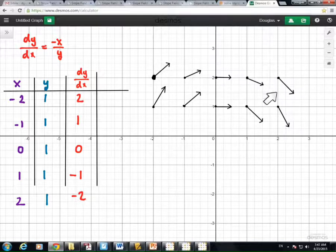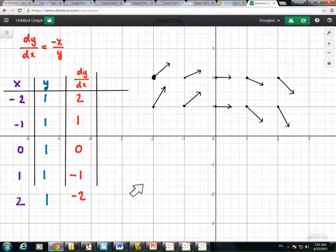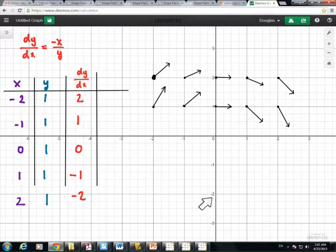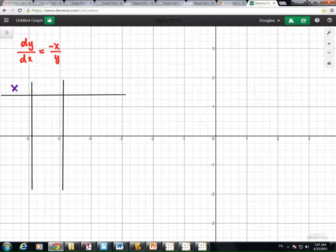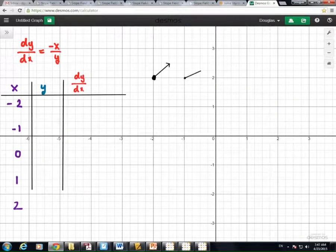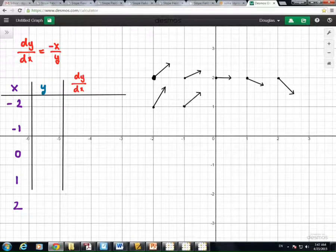So here we've created a field of vectors, and we can continue on with this algorithm and fill the entire page with vectors that show the direction of the solutions to this differential equation, even though we don't have the full graph of each of those solutions. You can see here, this is starting to look kind of circular, like it's swishing around or something.